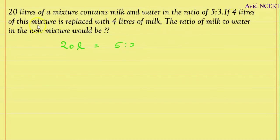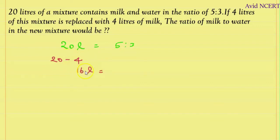If 4 liters of this mixture is replaced with 4 liters of milk, from this 20 liters, 4 liters is taken out — which is 20 minus 4 equals 16 liters. So now the amount of mixture remaining is 16 liters, still at the ratio of 5 is to 3, with 5 parts milk and 3 parts water.